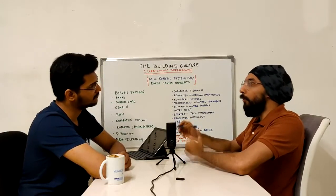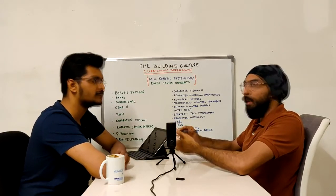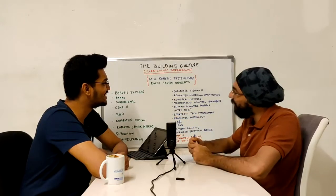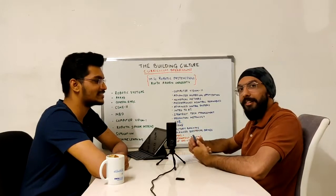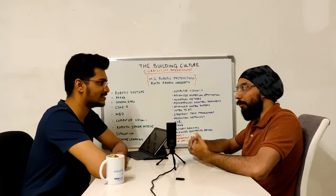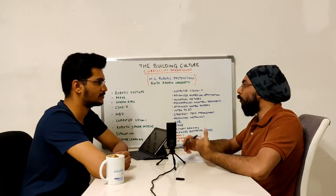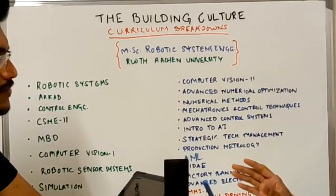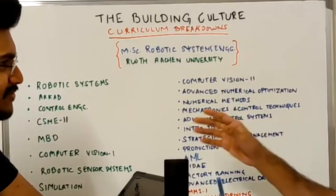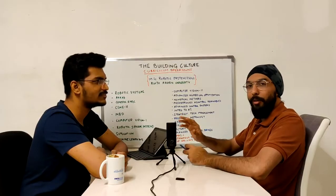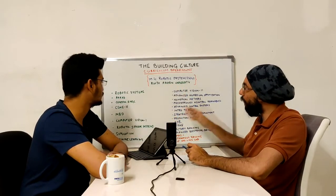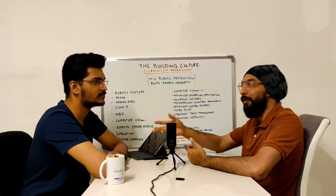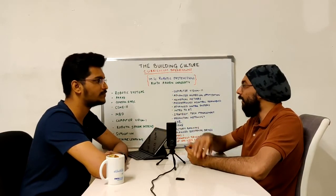In this podcast, there's a new section called the Building Culture Curriculum Breakdowns. Since both of us are studying our Masters in Robotic Systems Engineering at RWTH Aachen University, we will try to break down the whole curriculum and briefly explain what each subject is, how the curriculum is designed, and how you should be choosing your electives.